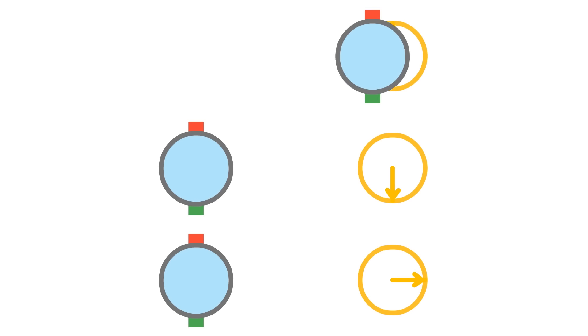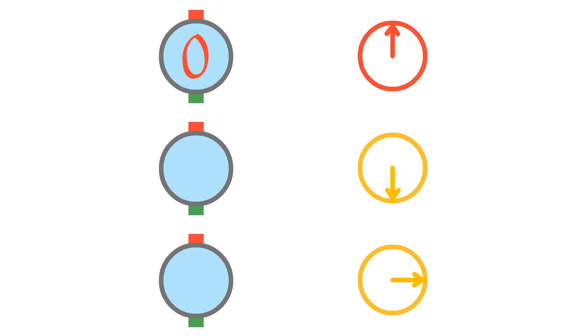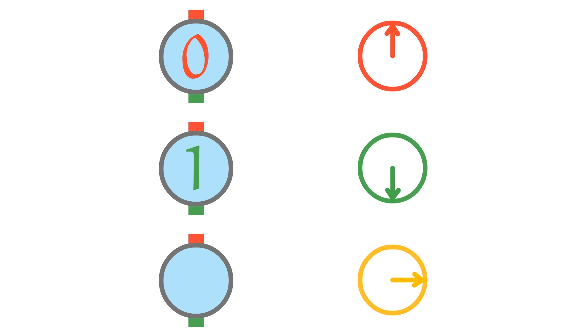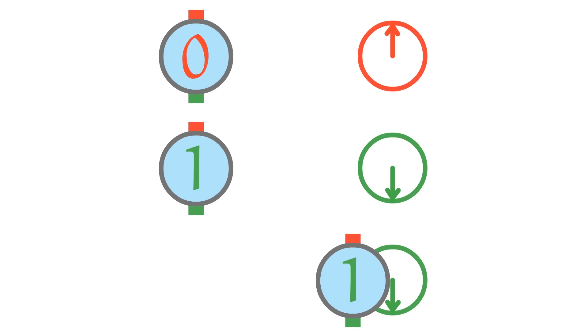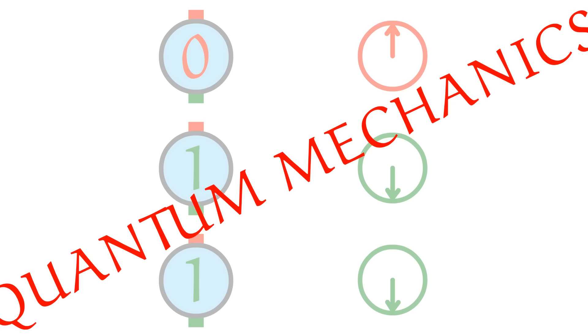When we try to read a qubit, we need to choose a direction to measure it in. If we measure it in the vertical orientation, we say that it's 0 whenever the arrow points this way, and 1 whenever the arrow points this way. If the qubit was in some non-vertical state, our measurement forces the qubit to choose one of them — because quantum mechanics!